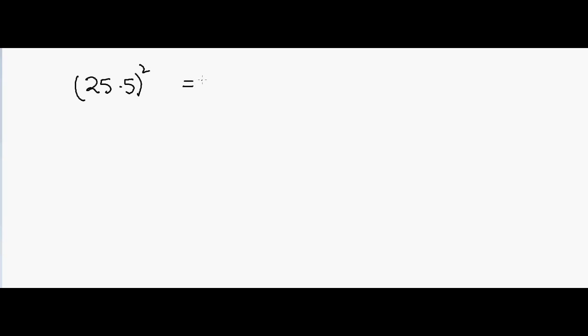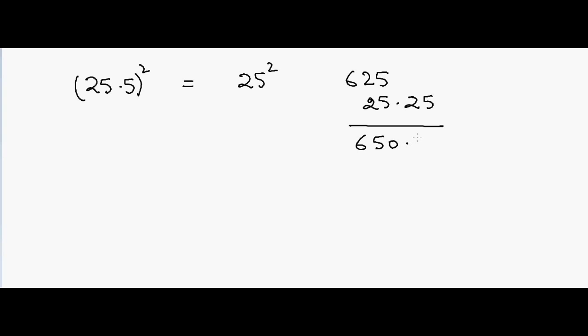Let's go to a more difficult one. Suppose if I have 25.5 squared — that will be equal to 25 squared, which is 625, and then we add 25.25 in the end. So the answer will be equal to 650.25. That's the answer.